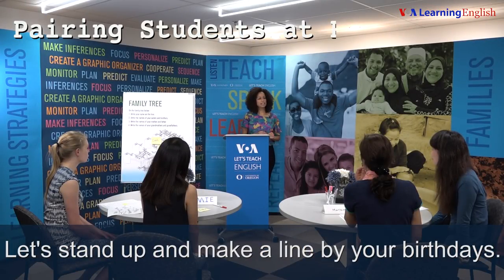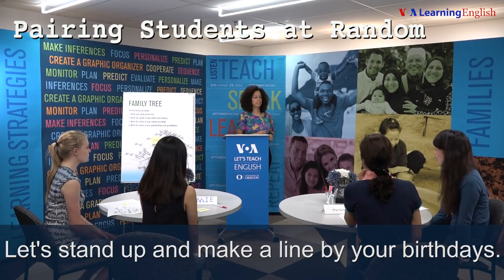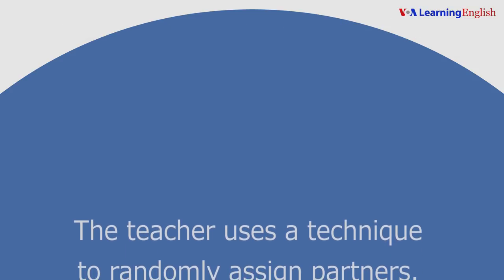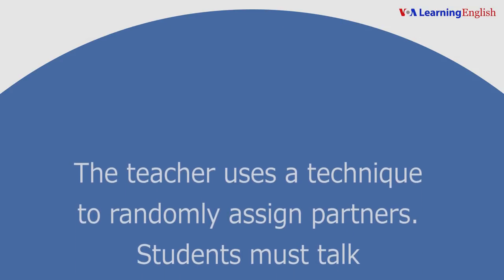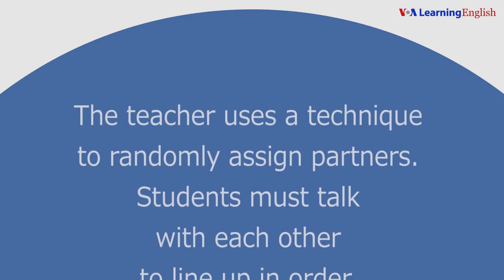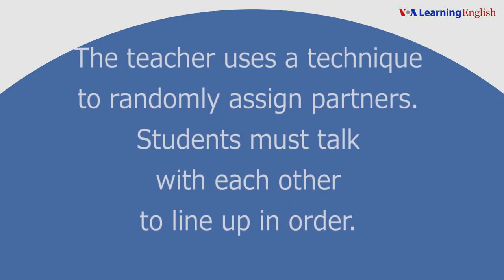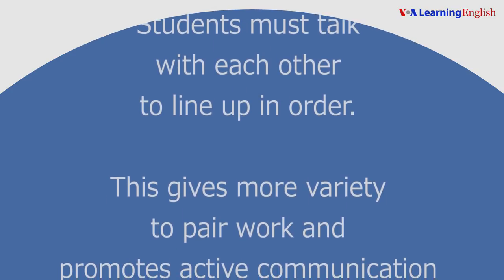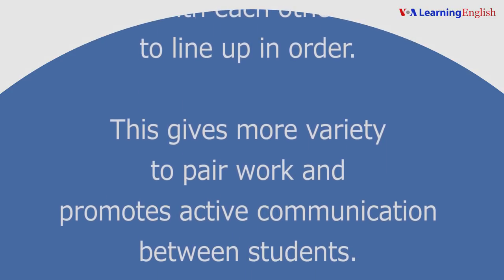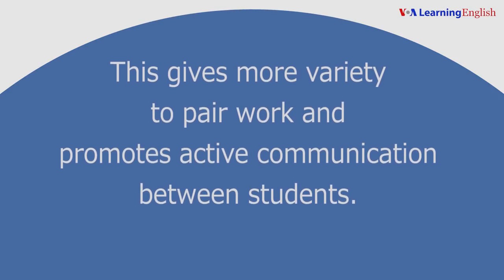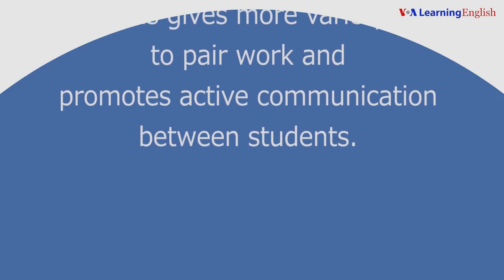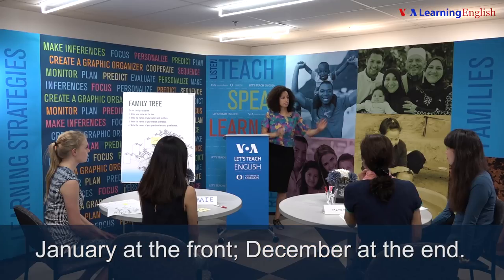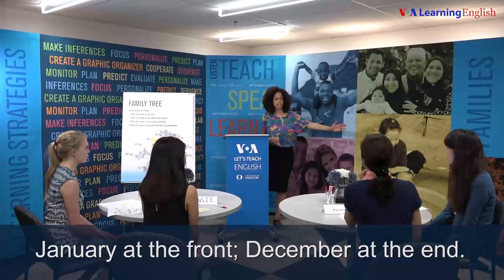Let's stand up and make a line by your birthdays. Pairing students at random: the teacher uses a technique to randomly assign partners. Students must talk with each other to line up in order. January at the front, December at the end.